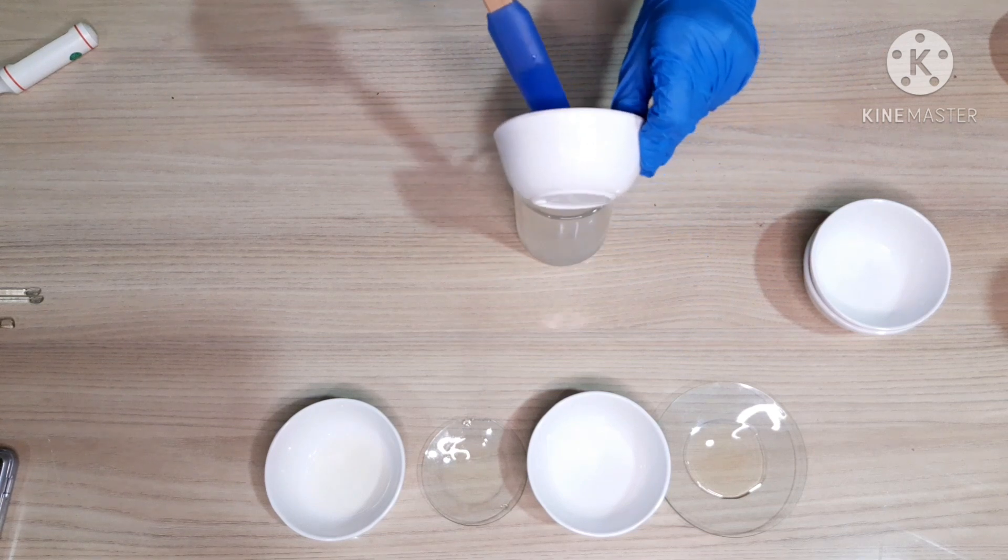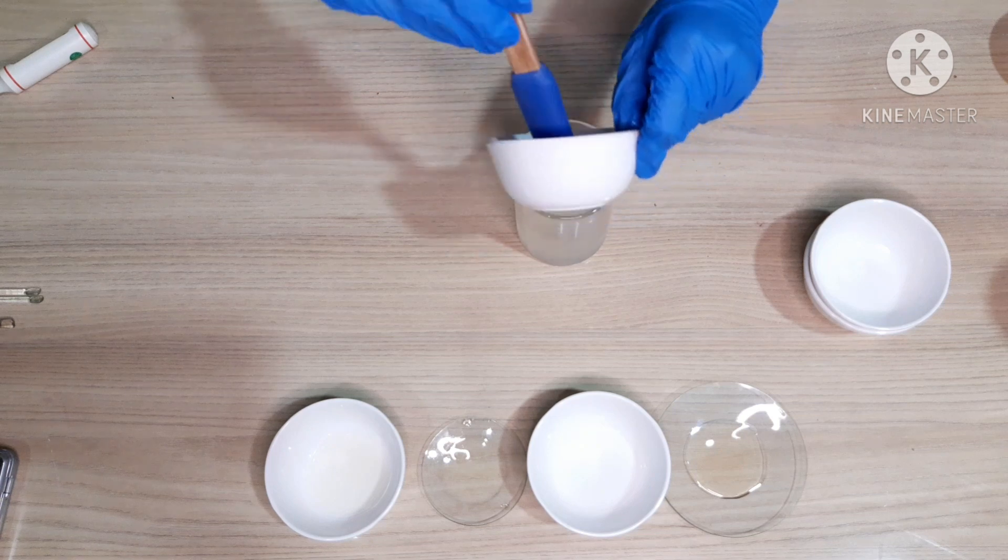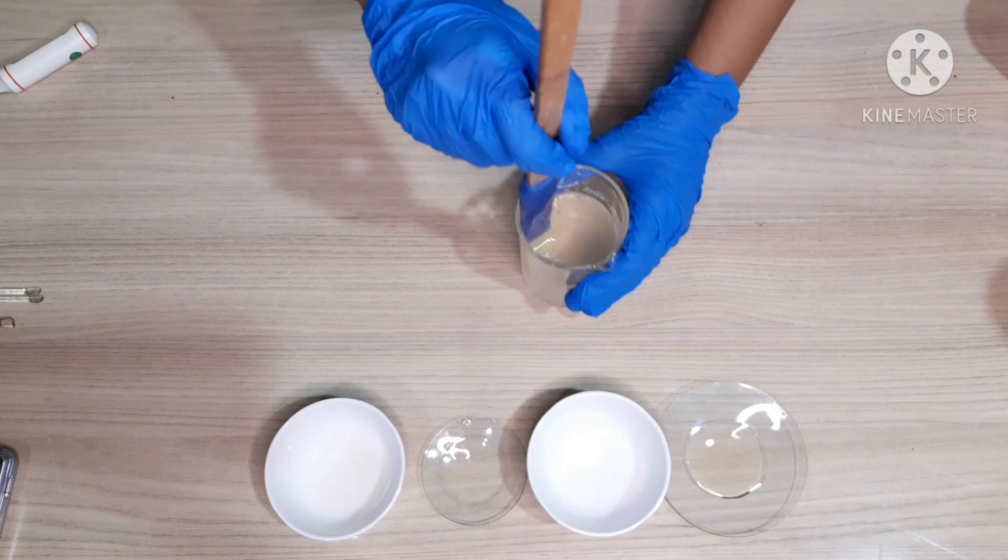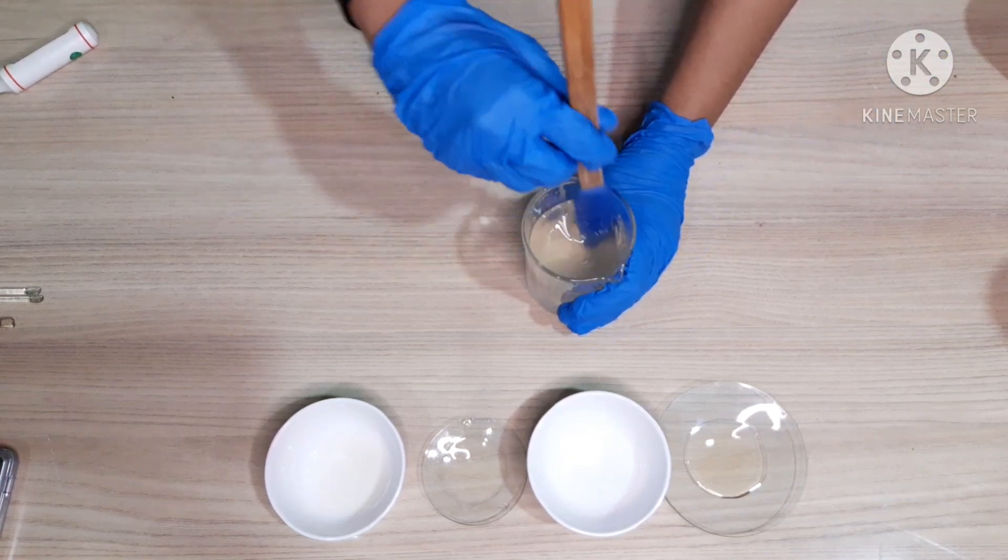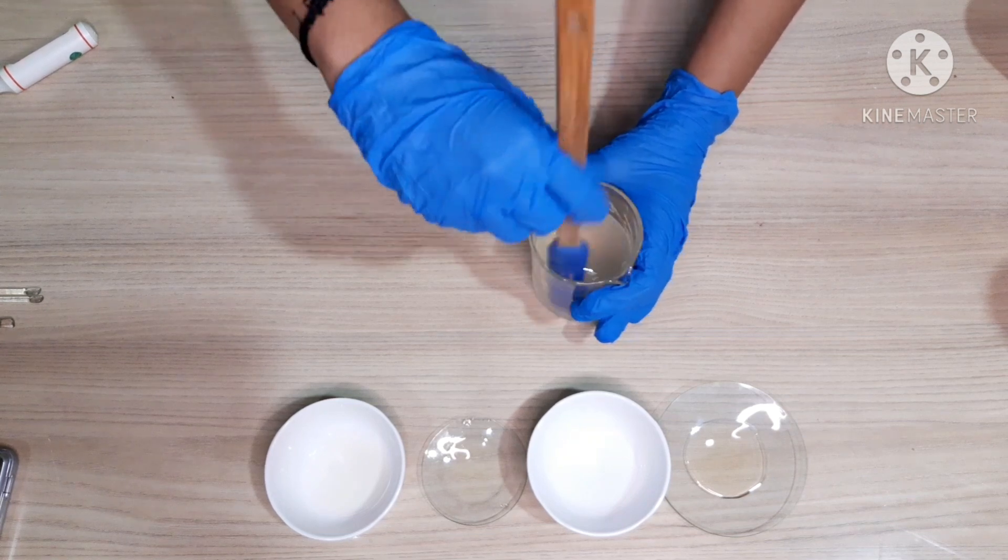If you want a thicker shampoo, you can definitely add another gum. Slowly we'll stir it. Okay, so let's wait for it to come down to room temperature so that we can add our cool-down ingredients.